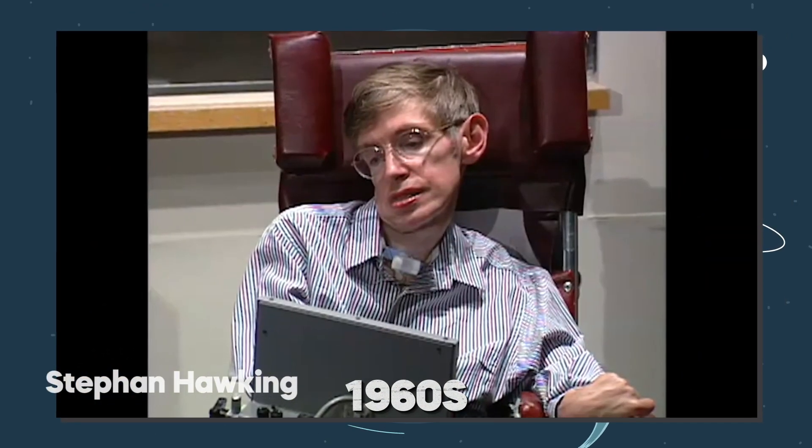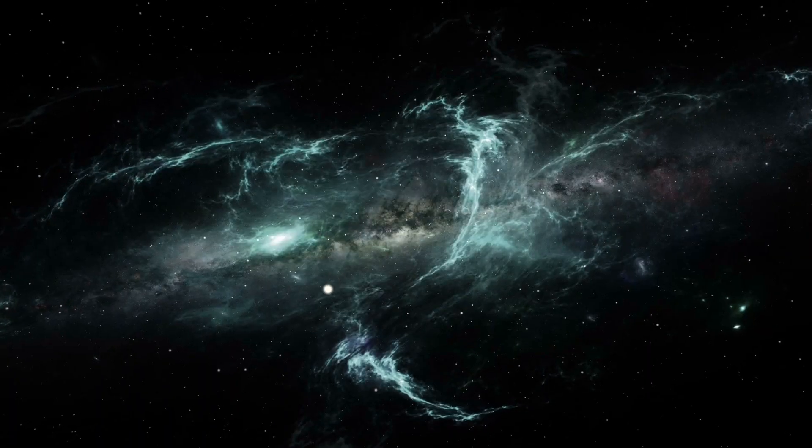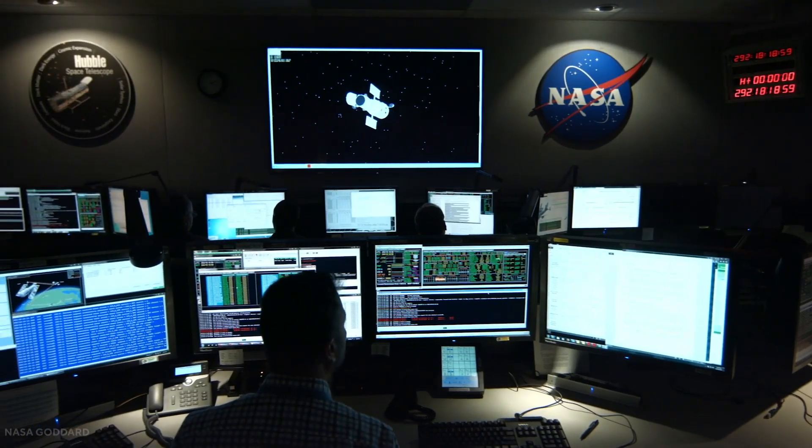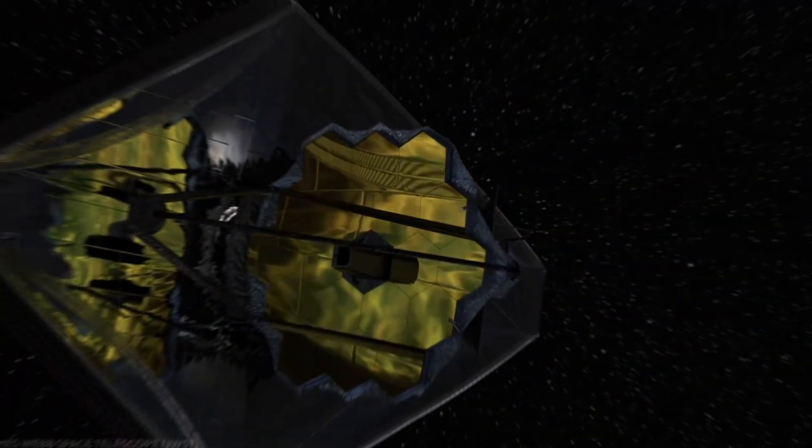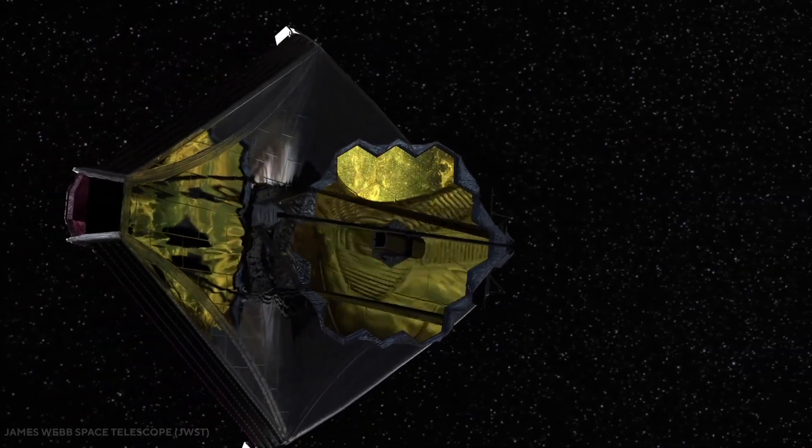According to Stephen Hawking's theory from the 1960s, there are many universes, and they're all separated by an infinite amount of space. Scientists have been looking for proof of other universes for a long time, and now they may have found it with the James Webb Telescope.